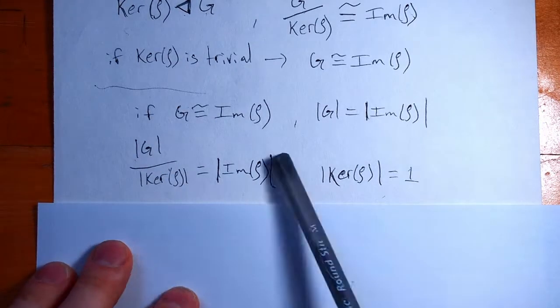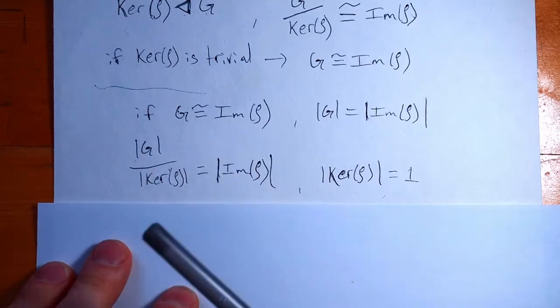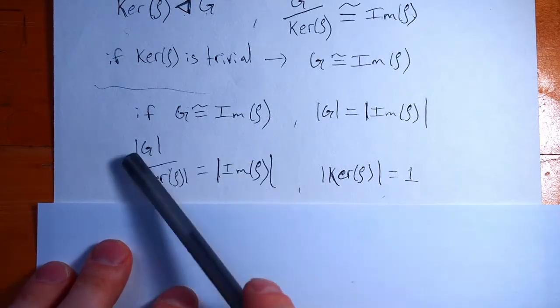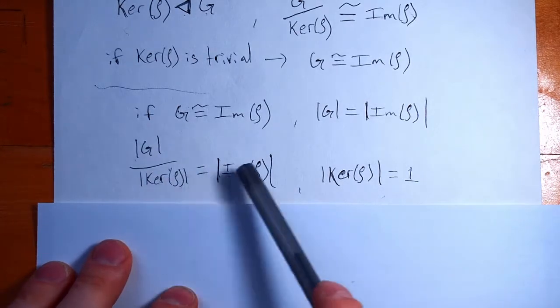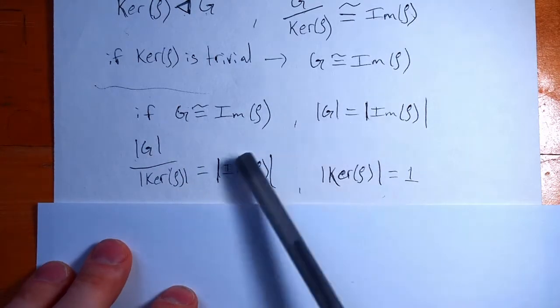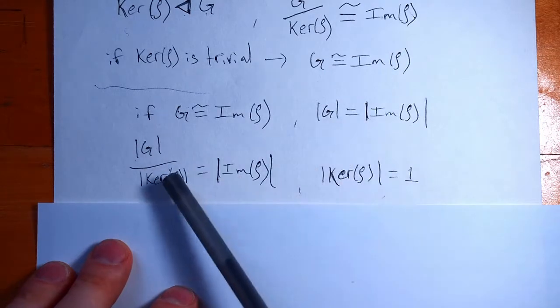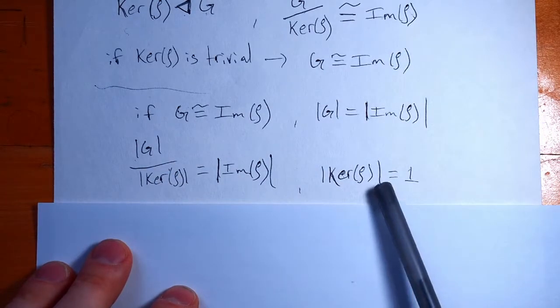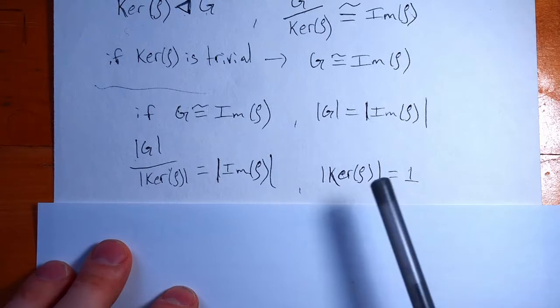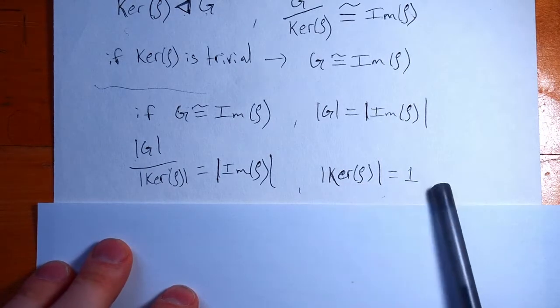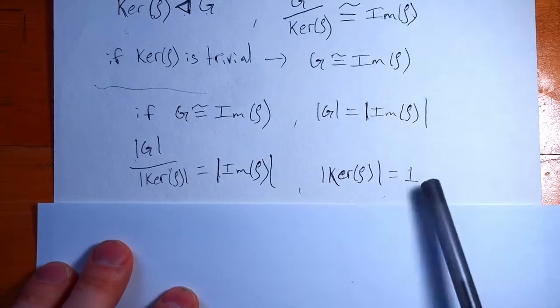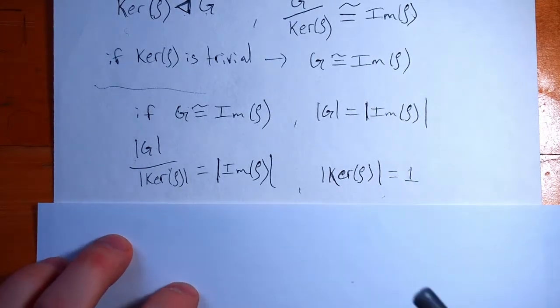This is my math fact. And this is why we needed to assume that the order of G was finite, right? If you have infinities coming in all over the place, you might get yourself into trouble. Provided that everything here is finite, if we plug this in over here, we're going to find that the kernel of our representation has to have order one, right? It has only one element in it. So if the kernel has one element, that is what it means for the kernel to be trivial. So we've just proven that this is an if and only if statement, that the kernel is trivial if and only if G is isomorphic to the image of rho.